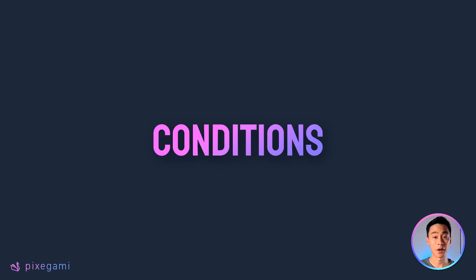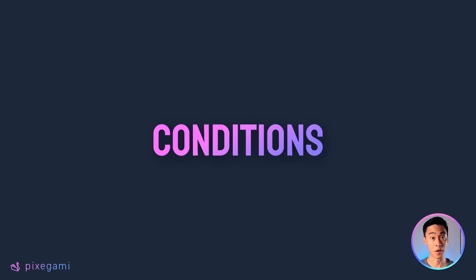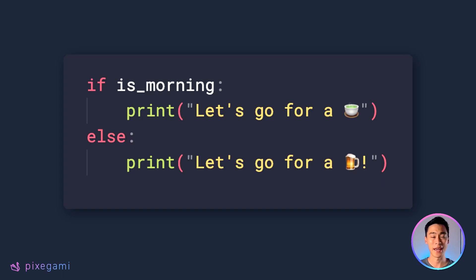Hey everyone, welcome to part four of this 12-part Python tutorial series for beginners. In this chapter, we're going to learn about conditions in Python, which we can use to control the flow of our program based on whether something is true or false. Instead of just executing every line from top to bottom, we can make it execute just some parts and not others by using conditions.